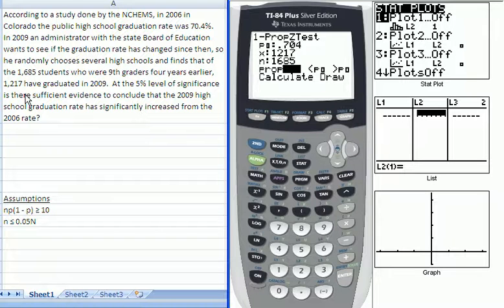Okay. Now the last thing we need to input is the type of test we're doing. And the question is phrased, we're asking if the graduation rate has increased from 70.4%. That's basically a statement of the alternative hypothesis. And in this case, that would be a right-tail test.